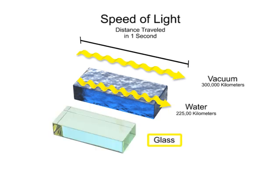In glass, light travels at 67% of its speed in a vacuum, so the light speed is 300,000 times 0.67, or about 200,000 km per second.